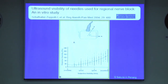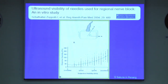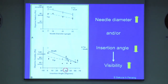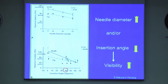Gray and colleagues conducted an in vitro study to see the effects of insertion angle of the needle on visibility. The angle of insertion was measured in relation to the phantom surface. They found good correlation between objective and subjective visibility of block needles. Objective visibility decreased linearly when using smaller needles, and also decreased with steeper insertion angles.